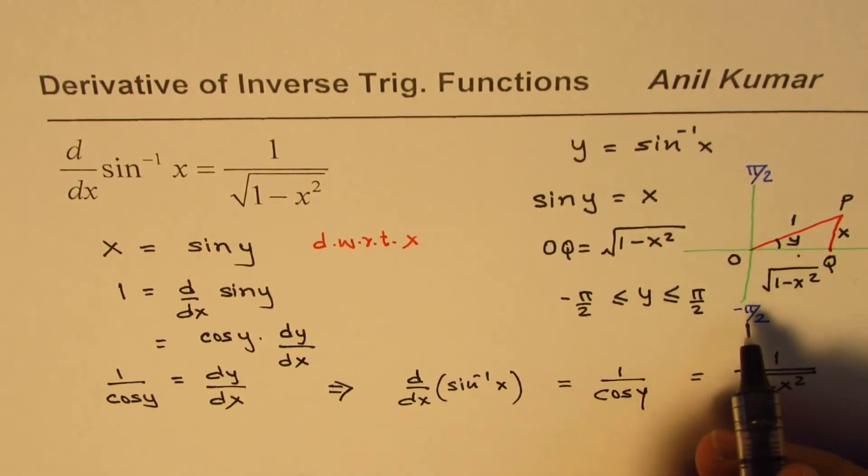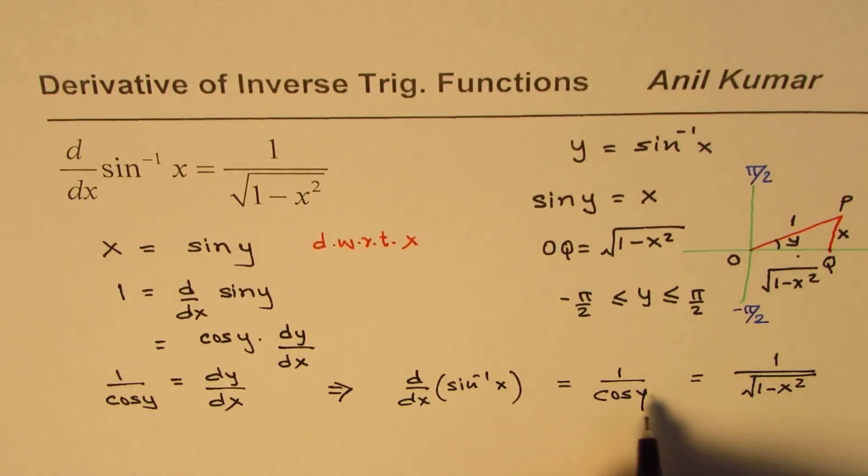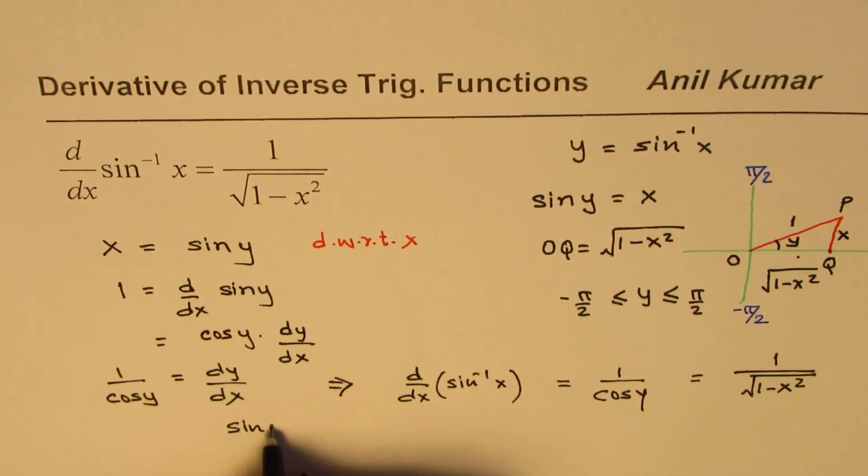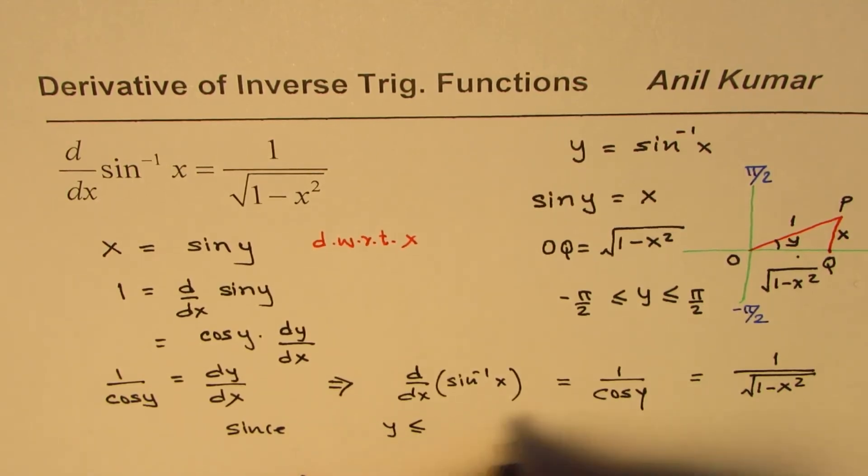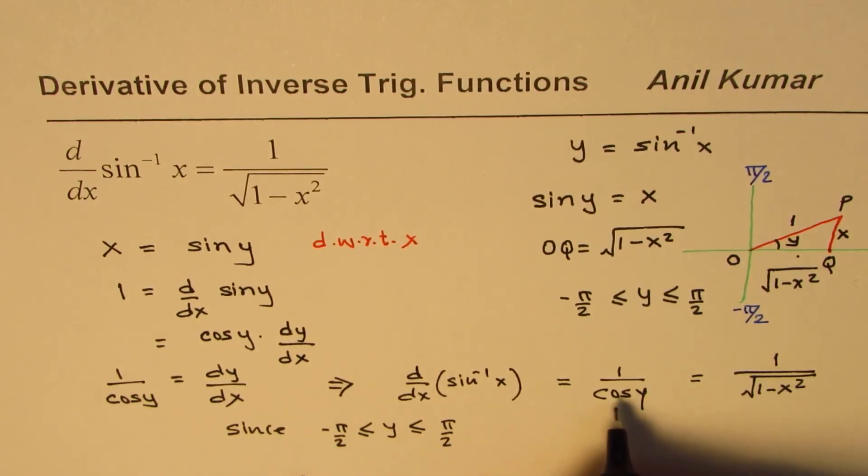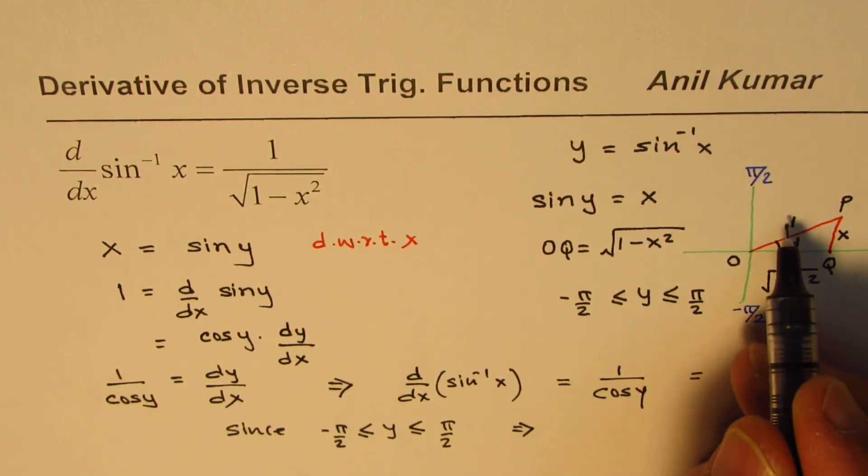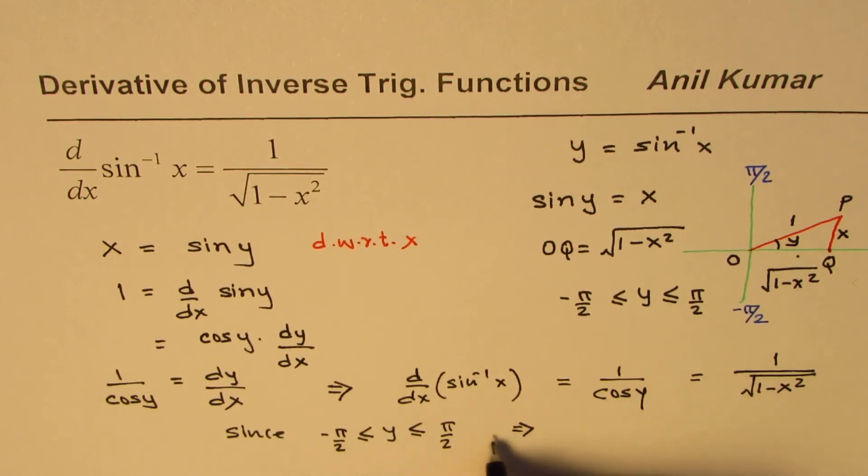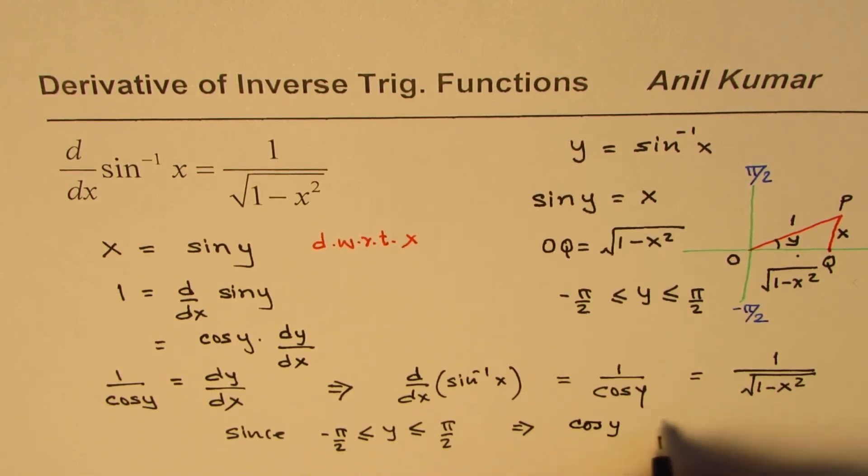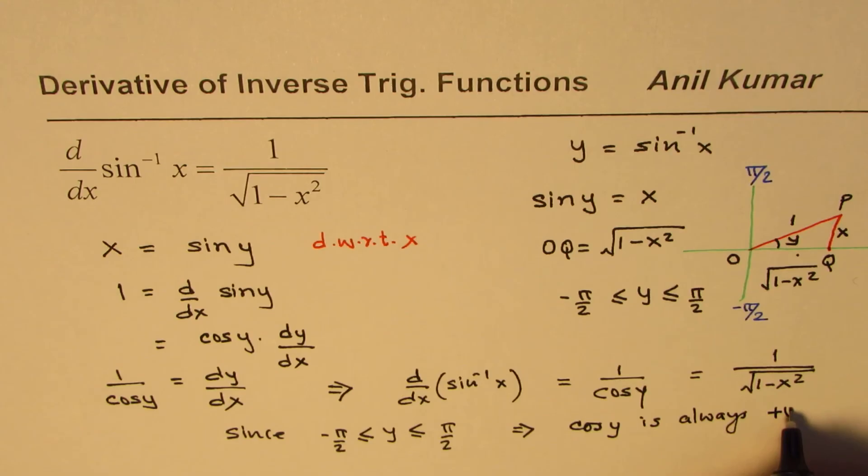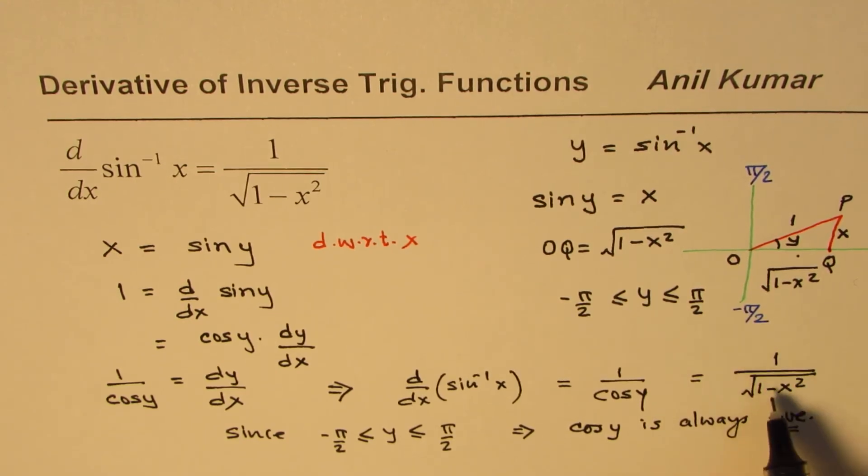Now, here, another important thing to note is that since the value of y is actually between minus pi by 2 to pi by 2, what do you think cos y will be? So that implies, within this, in coordinate 1 and 4, cos y is always positive. So this implies cos y is always positive. Always positive. And this derivative indicates that. Whenever you do square root, you only take positive values. So it is always positive.